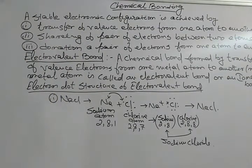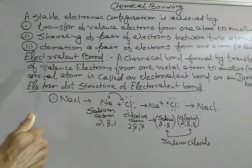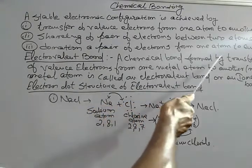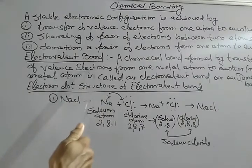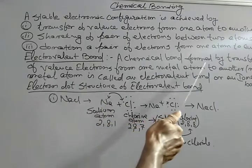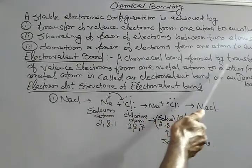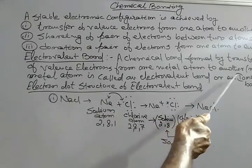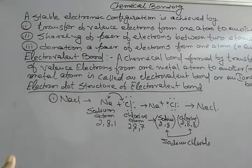Chemical bonding is of two types: one is electrovalent bond and the second one is covalent bond. Today we will read about the electrovalent bond. An electrovalent bond is a chemical bond formed by transfer of valence electrons from one metal atom to another non-metal atom, and it is also called an ionic bond.